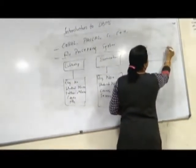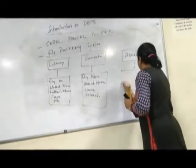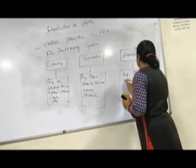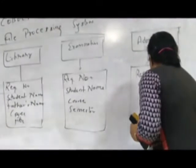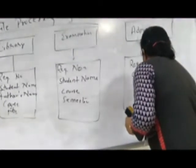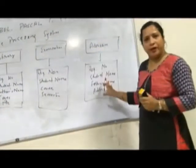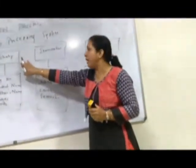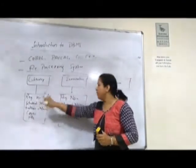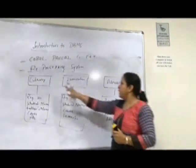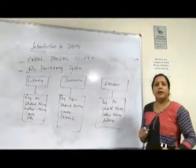Similarly, in the case of admission, it would again maintain registration number, student name, and father's name. Now, one thing we observe is that all these details are maintained separately in isolation — each file for library, examination, and admission maintains registration number and student name. So it means this data is duplicating.